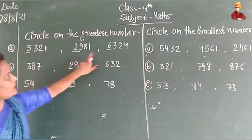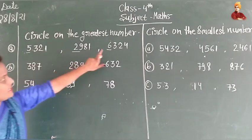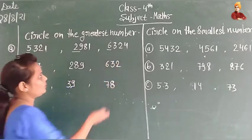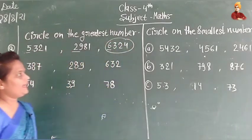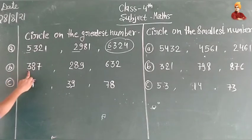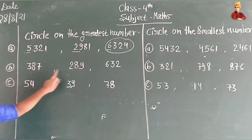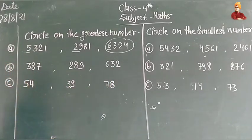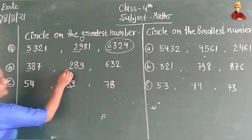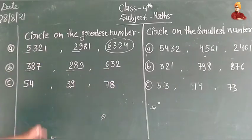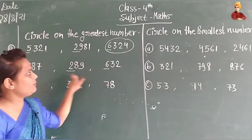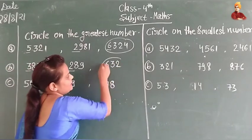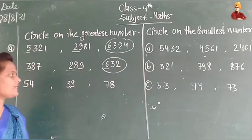So, which is the greatest number? The number 6,324 starts with 6. Looking at the first digits — 3, 2, and 6 — the biggest number is 6. So, 632 is the greatest number.